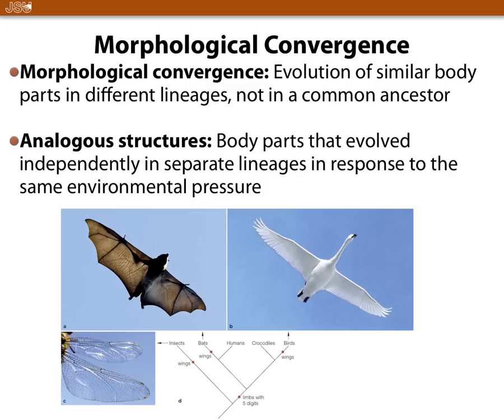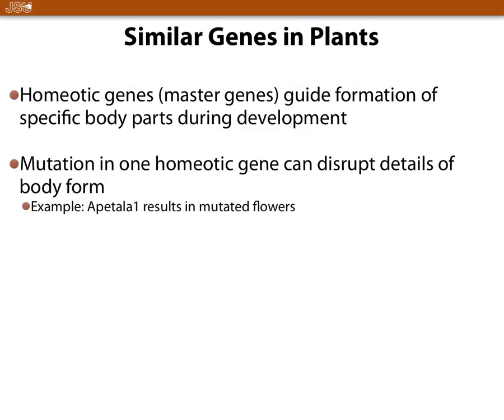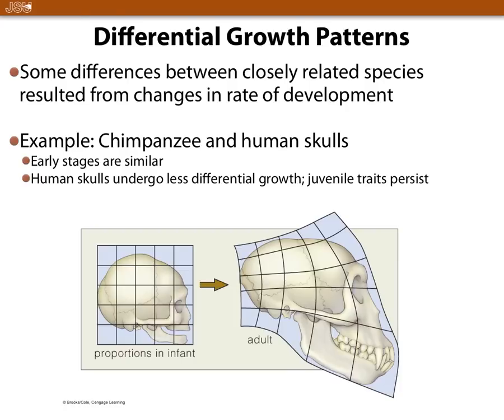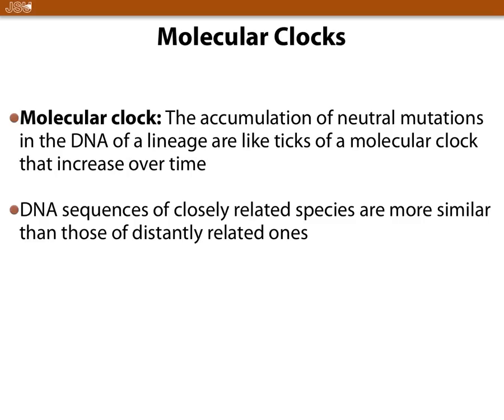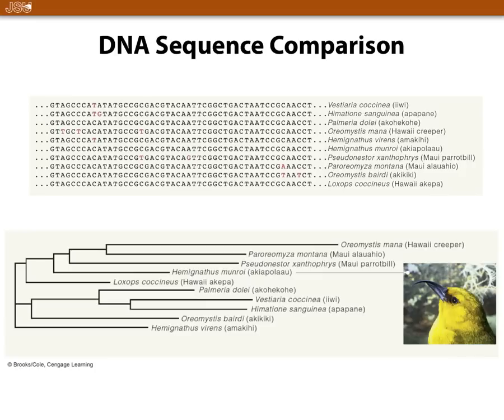Analogous structures — like wings — go along with morphological convergence. We also compare DNA to determine phylogenetic relationships. DNA alignments compare DNA sequences — the more different the sequences, the more distantly related the organisms; the more similar the sequences, the more closely related they are. That pretty much wraps it up for the test. Good luck.